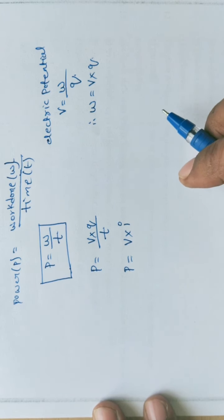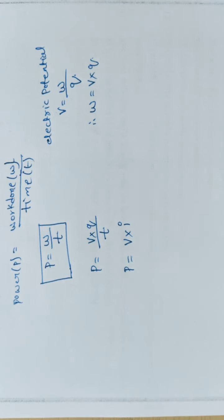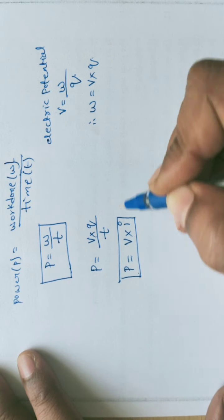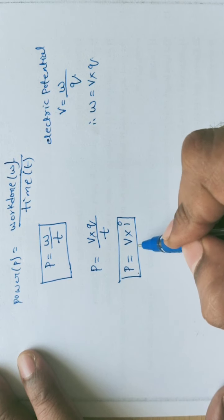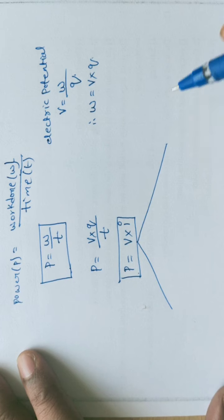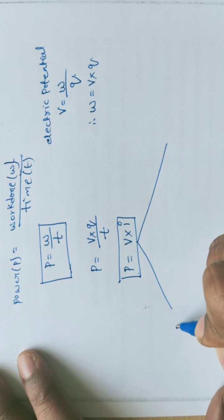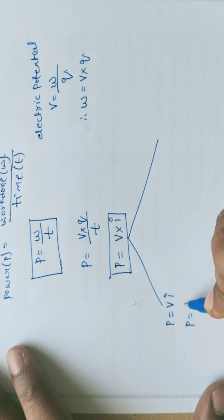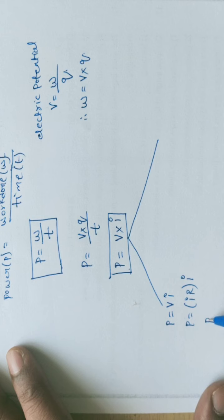P equals V into I is the first notation. From this, by Ohm's law, substituting V equal to IR, we get P equals I squared R. This is the second notation for power.